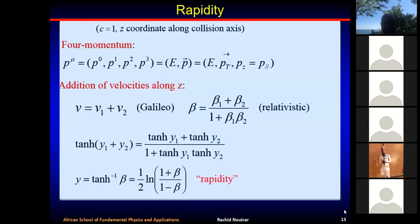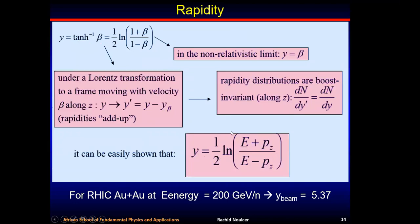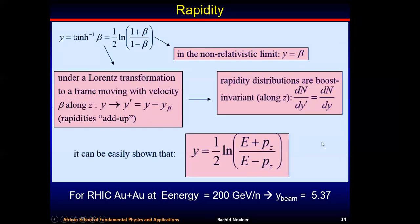Resuming after a brief connection issue: rapidity is a function of velocity, but you can also express it as a function of energy and momentum. This means to define rapidity you need a detector that can give you both the energy and the momentum of the particles. For RHIC energy gold-gold at 200 GeV, the rapidity is around 5.4, so if you want all particles detected you need to cover that rapidity region.